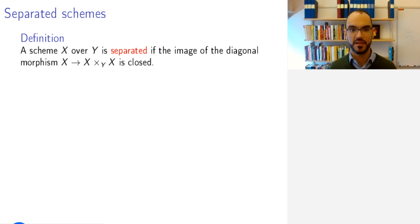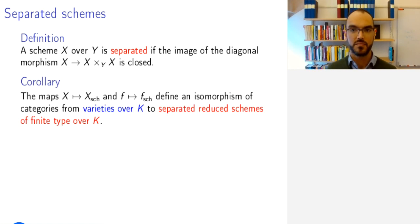Now, in order to go all the way and do the same thing for varieties, we need to define what it means to be separated. In complete analogy with the definition for varieties, we say that a scheme X over Y is separated if the image of the diagonal morphism from X to X fiber product over Y with itself is closed. This is the map that maps something like that with this notation understood properly. And then, because the definitions align perfectly, the maps that associate to X the associated scheme and to F the associated map define an isomorphism of categories from the category of varieties over K to that of separated reduced schemes of finite type over K. This is just because a variety is, by definition, a separated pre-variety.